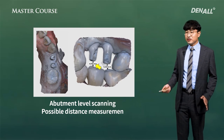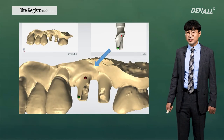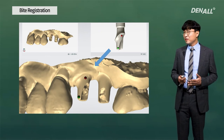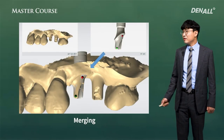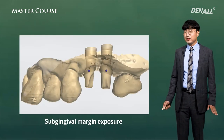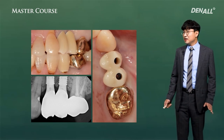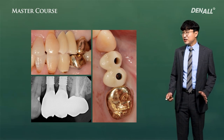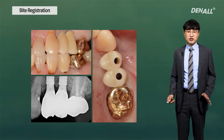Some subgingival margin was not fully scanned. In such cases, before delivering to the lab, I asked the lab to scan the prosthesis first. Using the scanned file from the lab to recreate the subgingival margin, merging was done and all images of the subgingival margin were obtained. Through digital scanning, the final prosthesis was made. Because fixture level impression resulted in occlusion being slightly low, scanning again at the abutment level is a very good approach.